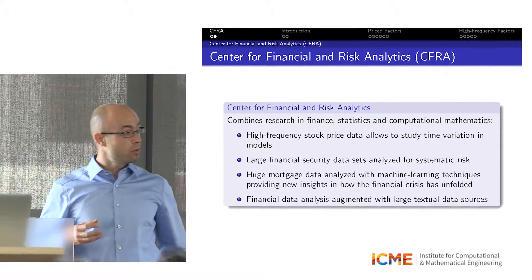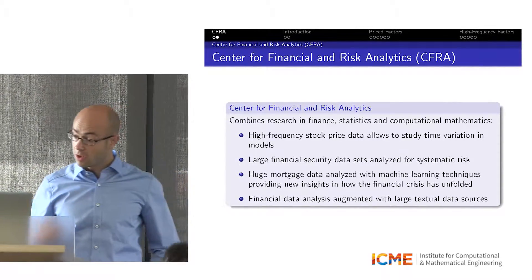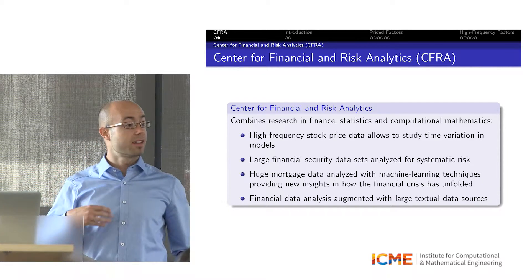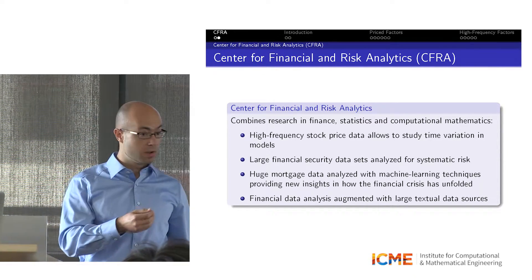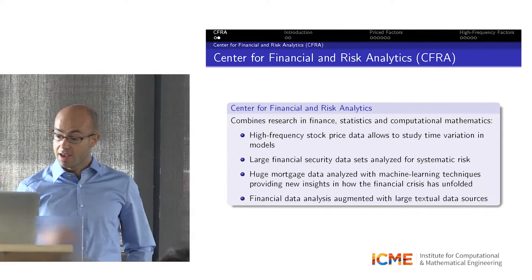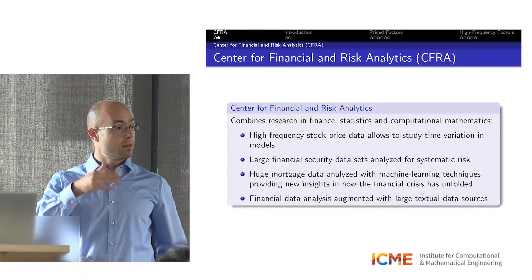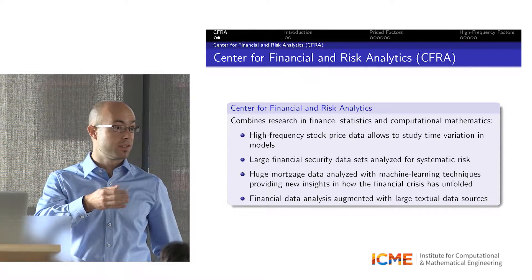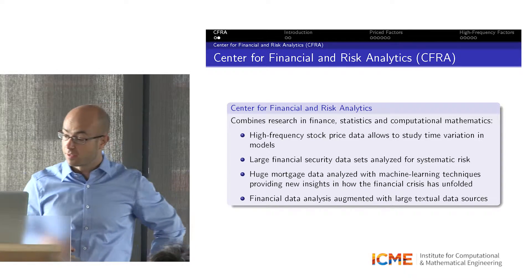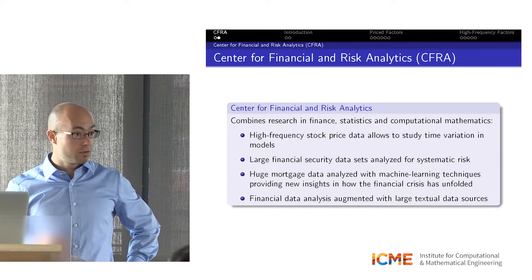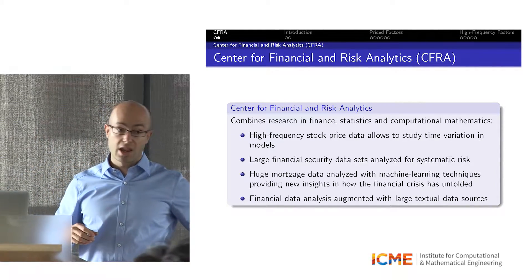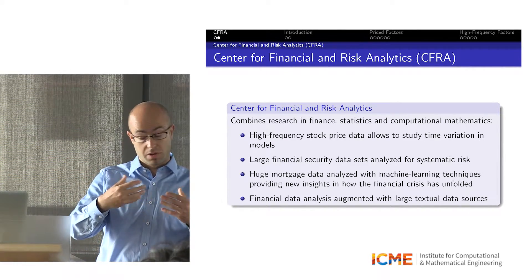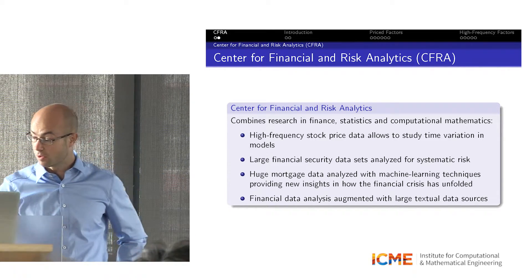I will present two examples of our work. I am working on factor modeling, trying to understand time variation in systematic factors using high frequency data. I am also trying to understand how we can model asset prices and explain why certain assets have different prices using large data sets of stock prices. Kai is working on credit risk data, analyzing a huge mortgage data set using machine learning techniques to understand how the financial crisis unfolded.